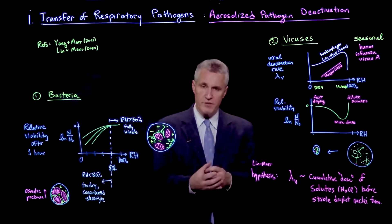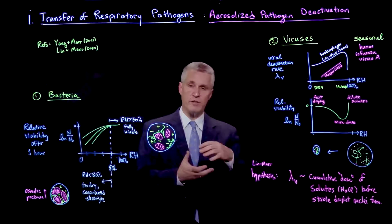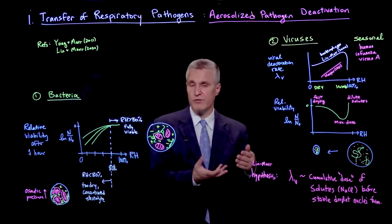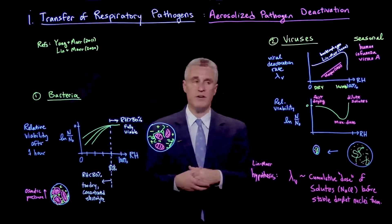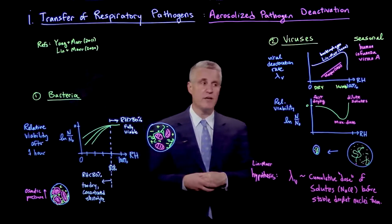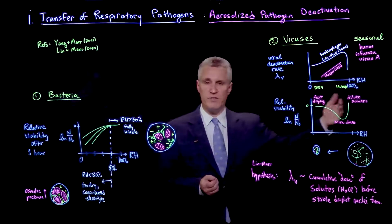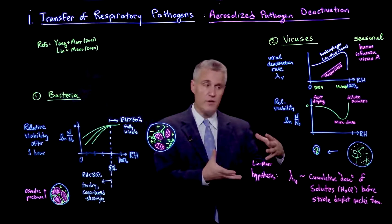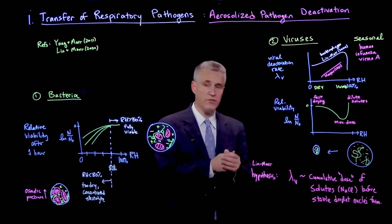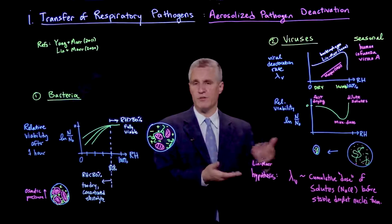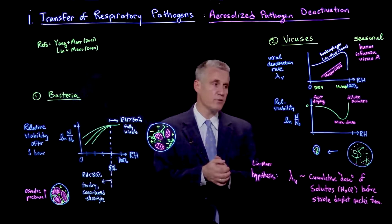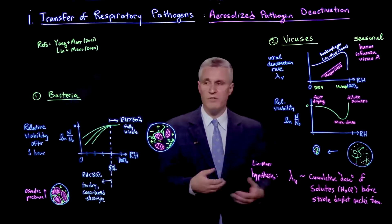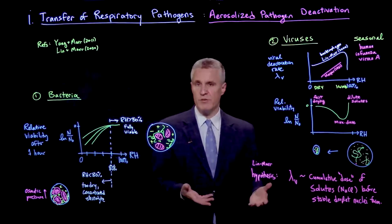If shrinking happens very fast, we end up with a droplet nucleus of mostly bound water over a short period of time, so exposure to those solutes is limited — hence, high viability and low deactivation rate in dry conditions. Conversely, in very humid conditions, the droplets stay big — they may even grow because of hygroscopic solutes — and in that case, plenty of solutes are present but very dilute, so the effect on the virus is minimal. The greatest deactivation and minimum viability is therefore at an intermediate range of humidities.